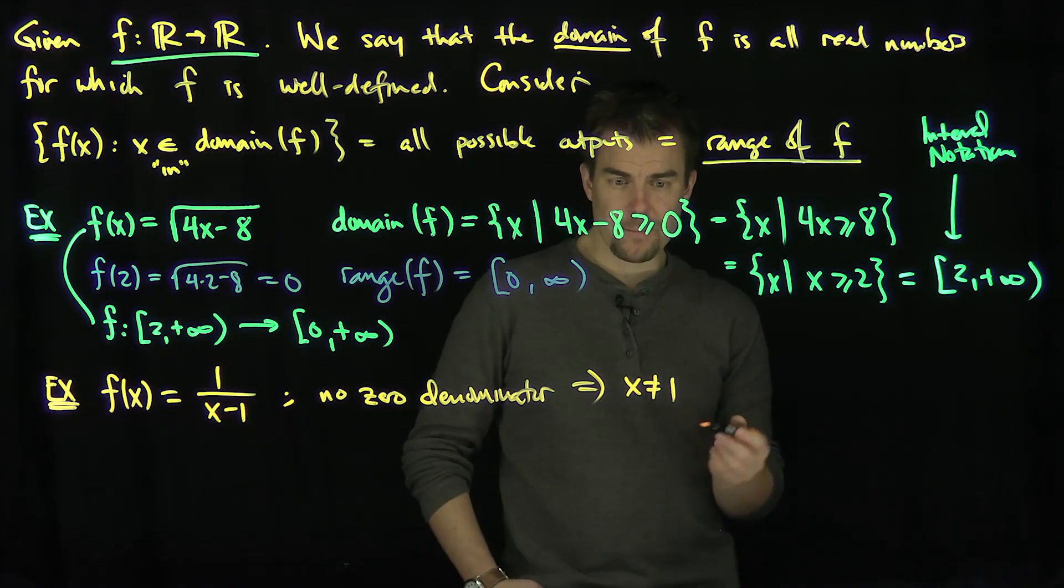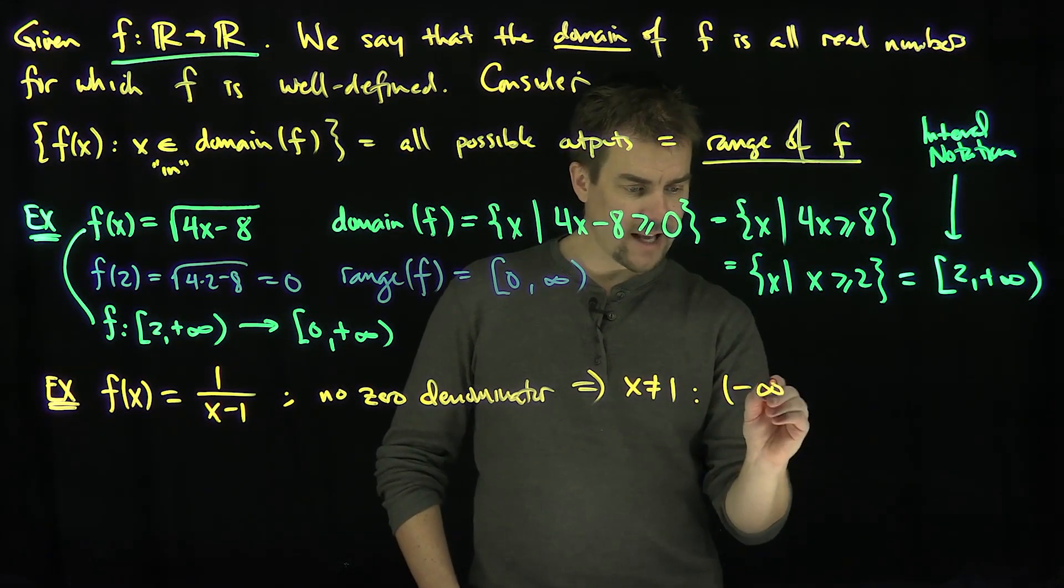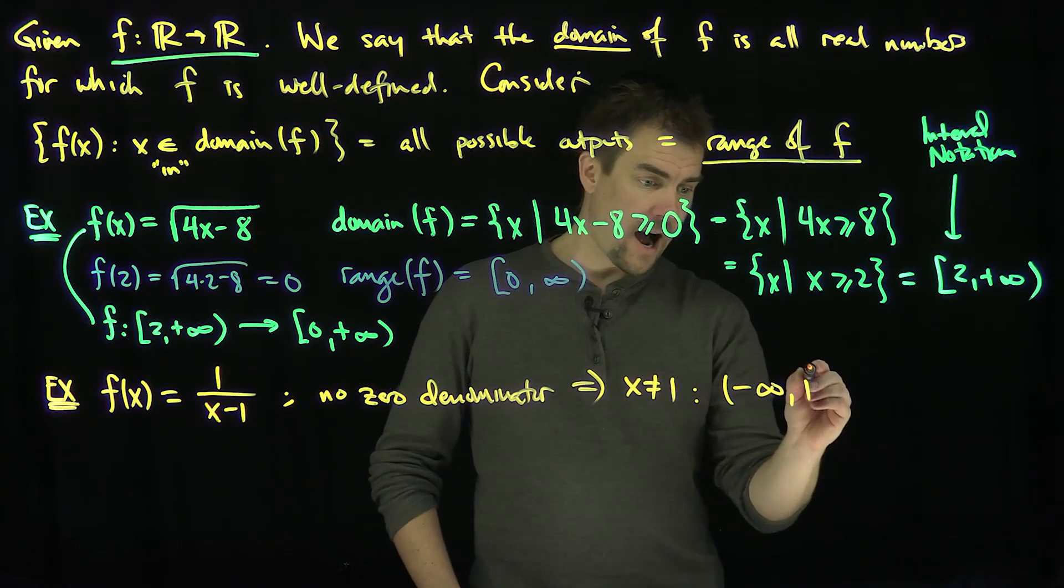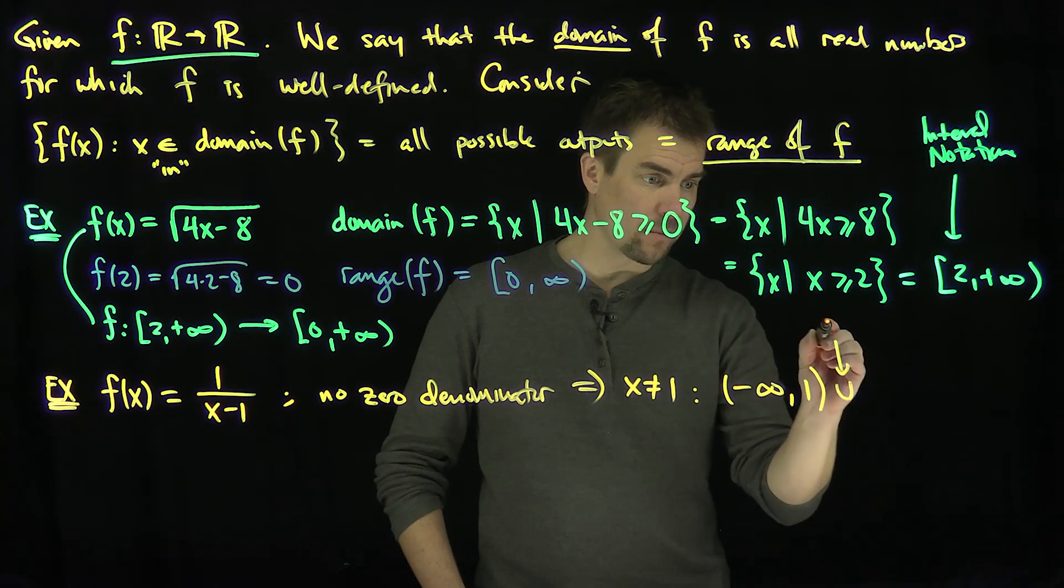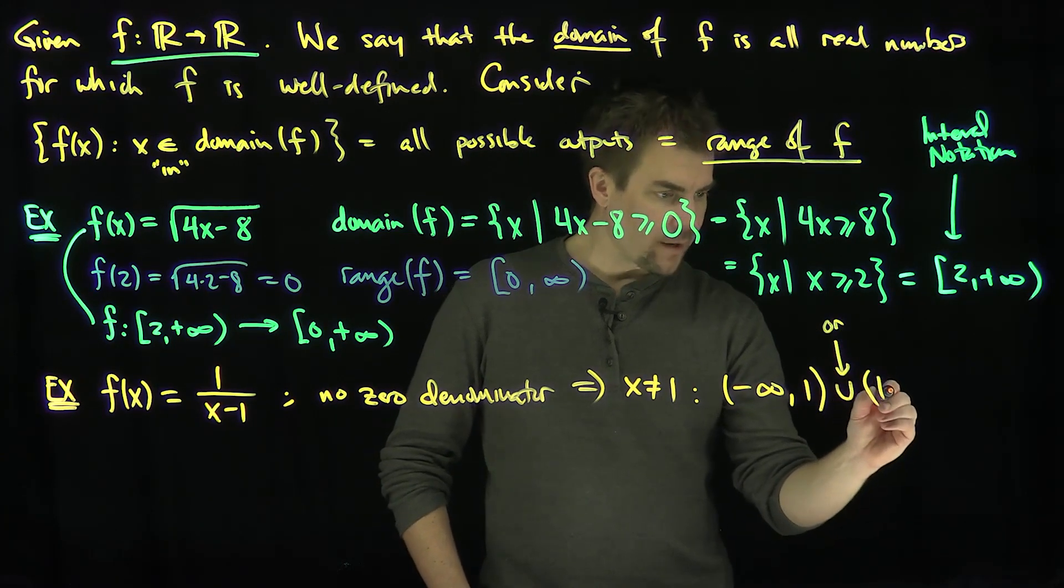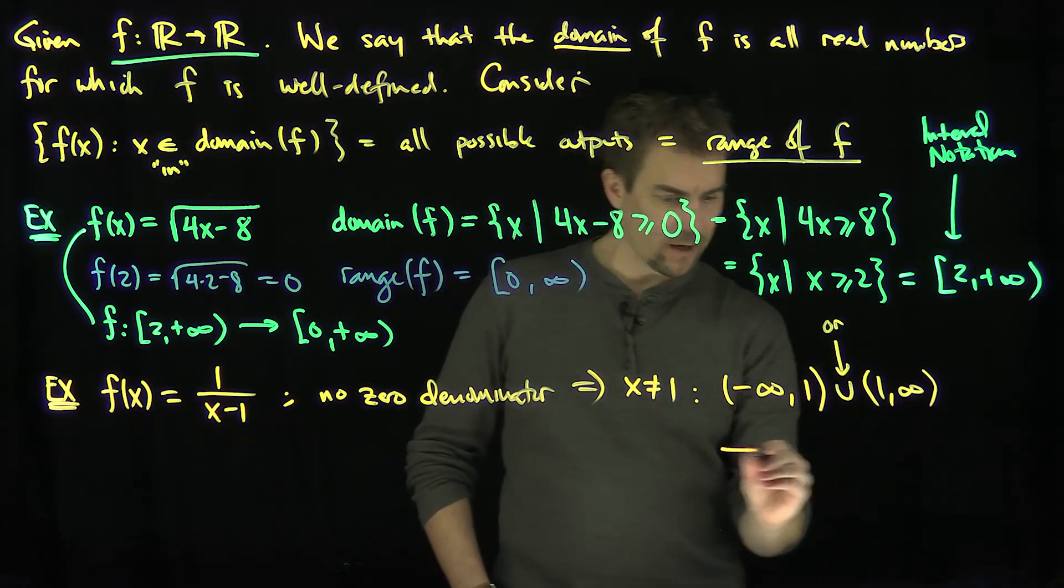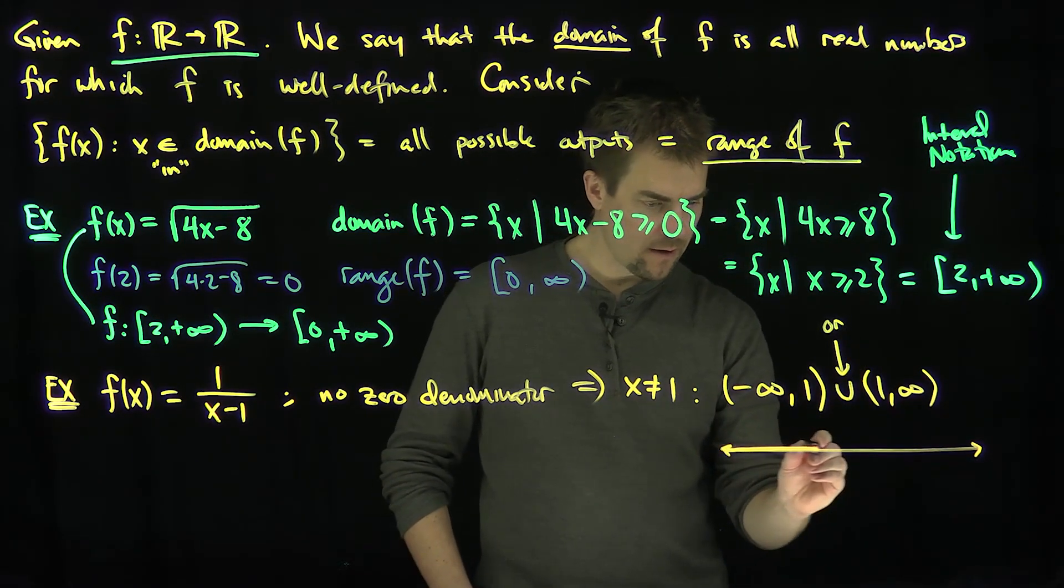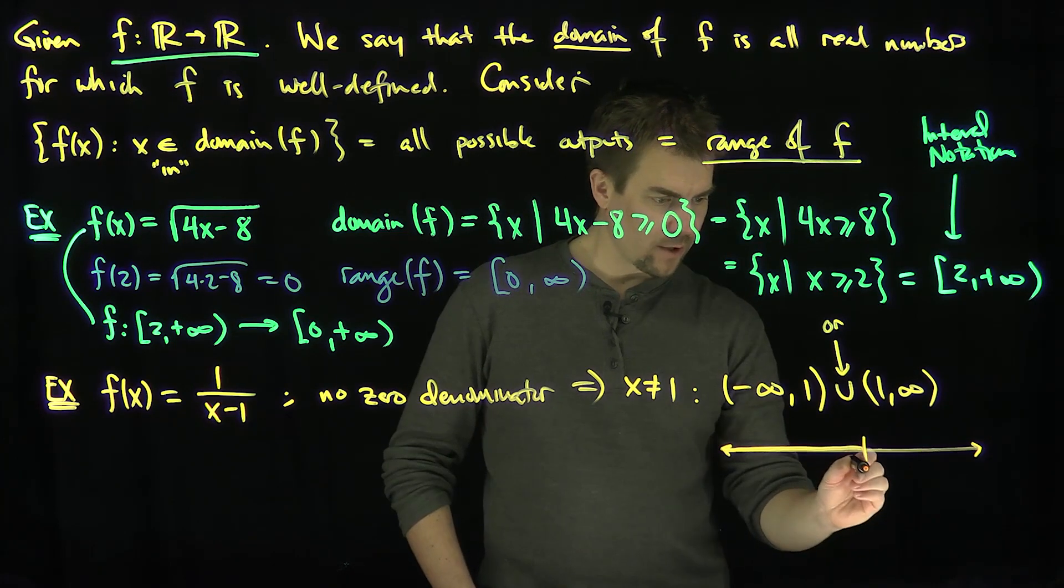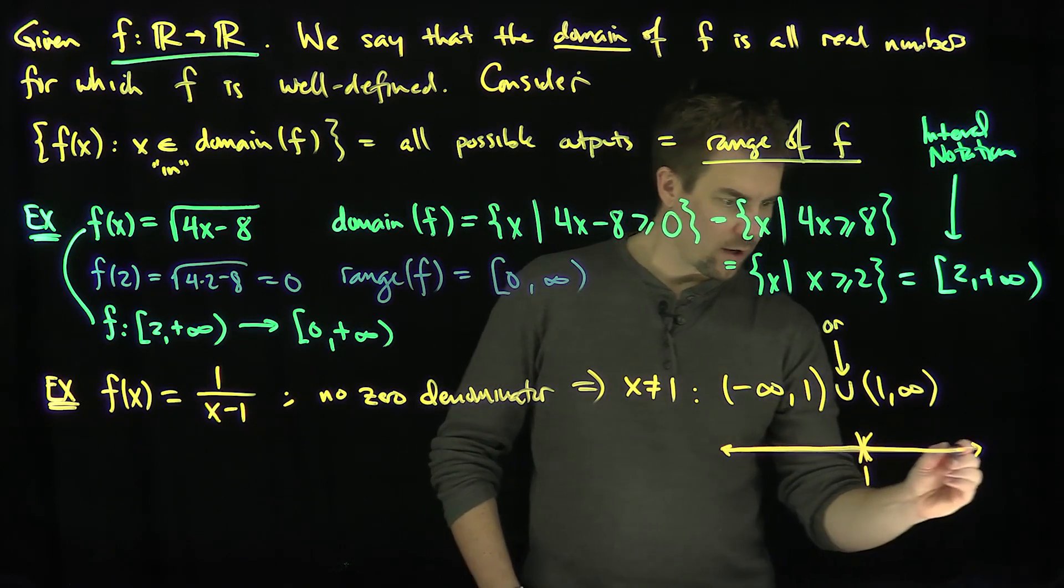Of course, if that's the only restriction that x can't be 1, I can write this in interval notation in the following way. It's everything from negative infinity up to 1, I exclude 1 with an open bracket, and then this union symbol means or, 1 to positive infinity. So I go from negative infinity all the way up to 1, I exclude 1, and then I go from 1 all the way to infinity.